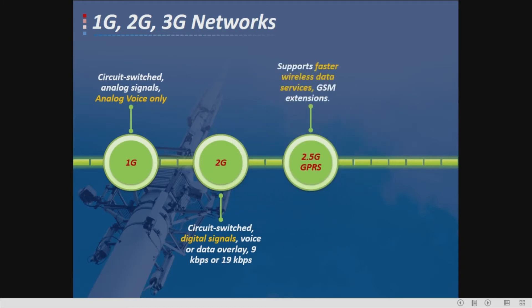Then we have the 2.5G system, which adds extra bandwidth technology to the current 2G system to support faster wireless data services — it is an extension of GSM. It supports higher data rate transmission for web browsing and also supports a new browsing format language called Wireless Application Protocol (WAP). The different upgrade paths include High Speed Circuit Switched Data (HSCSD), GPRS, and EDGE.